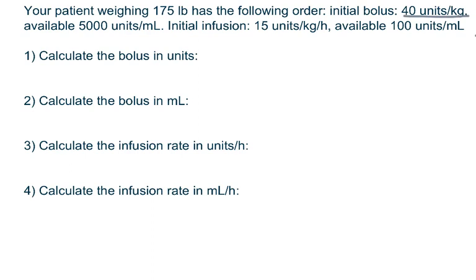The first step is to convert the weight. So 175 divided by 2.2 gives 79.54, which rounds to 79.5 kilograms.